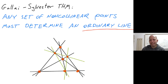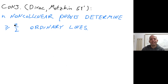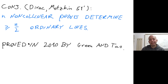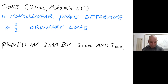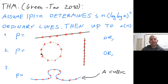There was a famous conjecture by Dirac and Motzkin that the number of ordinary lines must be at least n/2. As a student, this was my dream to prove. There are examples showing it could be less than n/2, but apart from a finite set of configurations, n/2 should be the lower bound. This was proved by Green and Tao in 2010 — I was very disappointed, of course, but that's part of life.